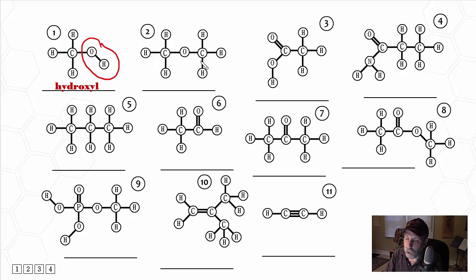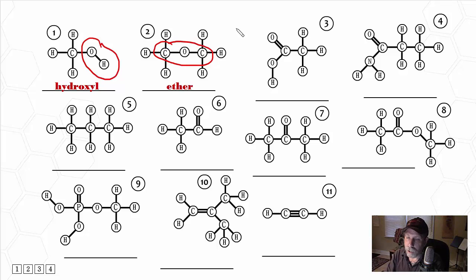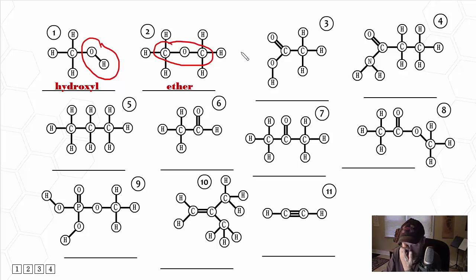Let's look at molecule number two. C-O-C is the special functional group within this molecule, so I'm going to circle that: C, O, and C. That is the ether functional group — write that down here: ether. That makes this molecule a type of ether. Which type of ether? We're not identifying that — we're just saying it's in the family of ethers.